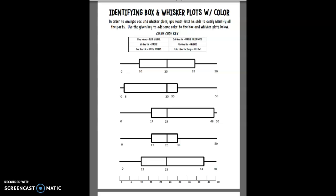It says identifying box and whisker plots with color. In order to analyze the box and whisker plots you must first be able to identify all the parts. Use the given key to add some color to the box and whisker plots below. The five key values are blue and we're supposed to label those.